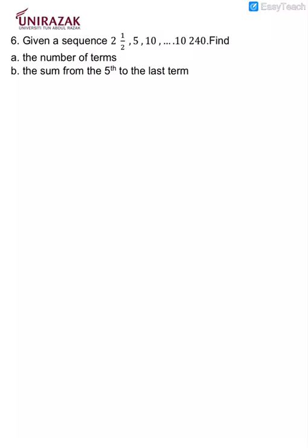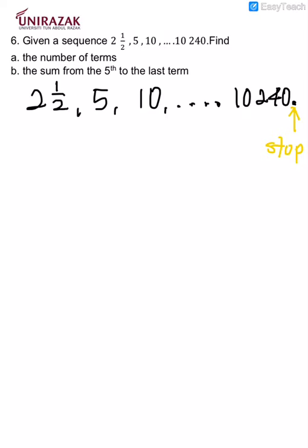Let's start with this. This is the first term, this is the second term, this is the third term, and it goes on until it stops here. When it stops, that means at a full stop here, the sequence has ended. I know this is term 1, term 2, and term 3, but the problem is I don't know what term is this. If I determine the n that is unknown here, I will get the number of terms that is asked in question a.